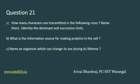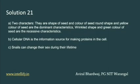Question 21: How many characteristics are transmitted in the following cases? Name them and identify the dominant and recessive traits. Next: what is the information source for making protein in the DNA? And third: name the organism which can change its sex during its lifetime. The answers follow.